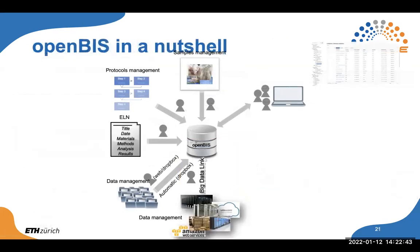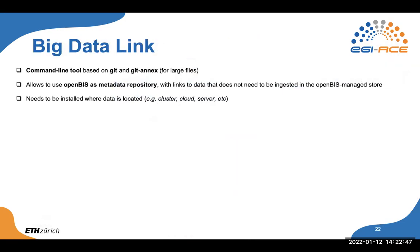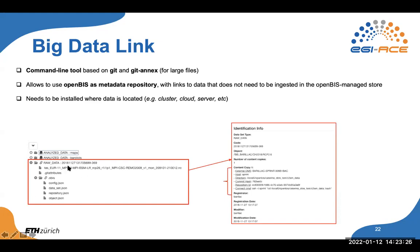We also have the big data link — a command line tool that allows OpenBIS to be used as a metadata repository. This is useful only in cases where you have large data and potentially don't want to move it around or store it in OpenBIS — however, you'd like OpenBIS to have some form of cross-reference so you don't have to move everything. This is very helpful with large collaborations involving many people in different places. The tool needs to be installed where the data is located, and it creates a new folder in OpenBIS with those files — you can then use SSH to connect to the server and access the files.